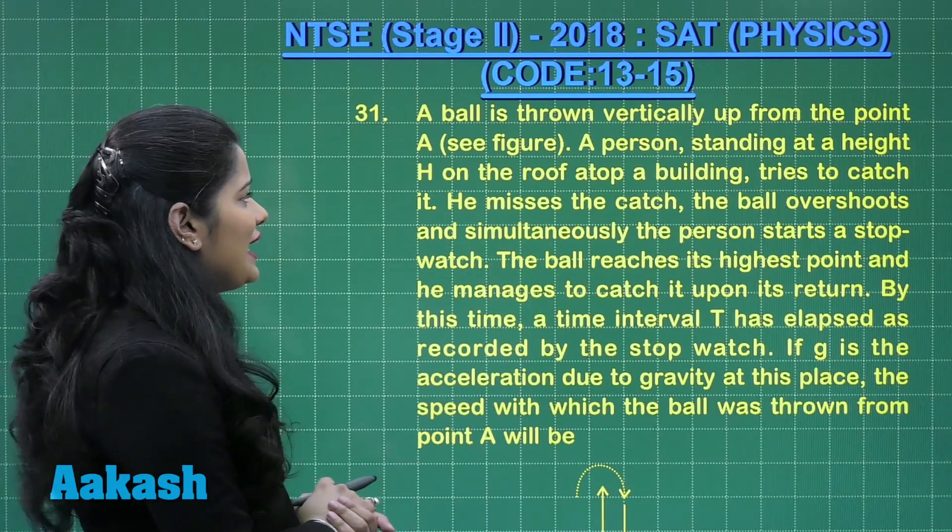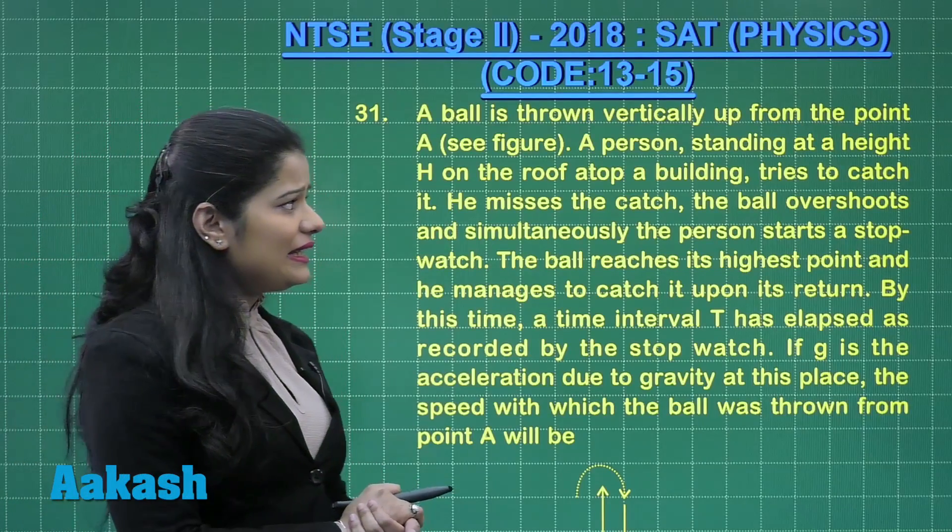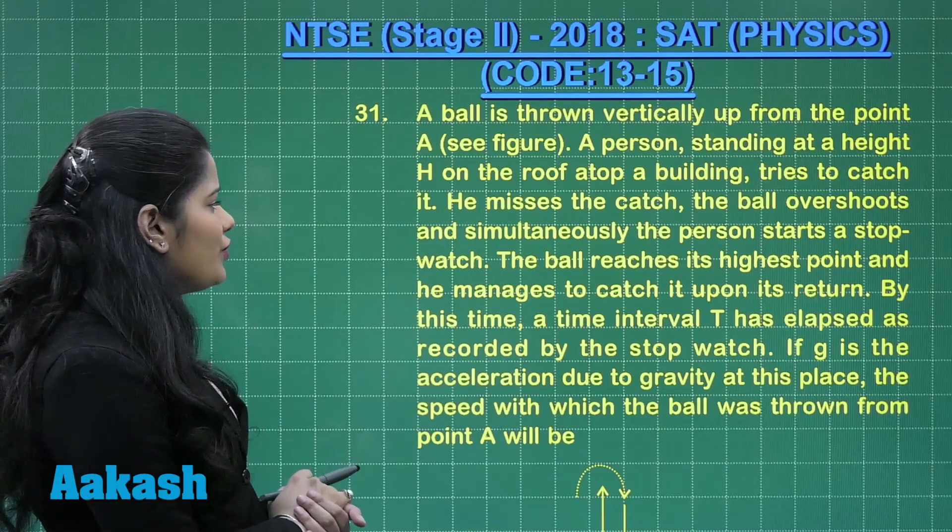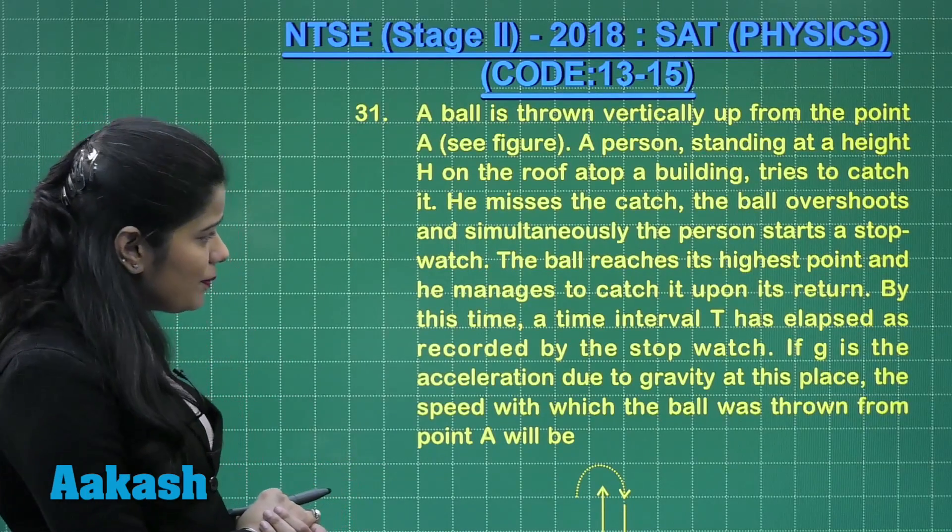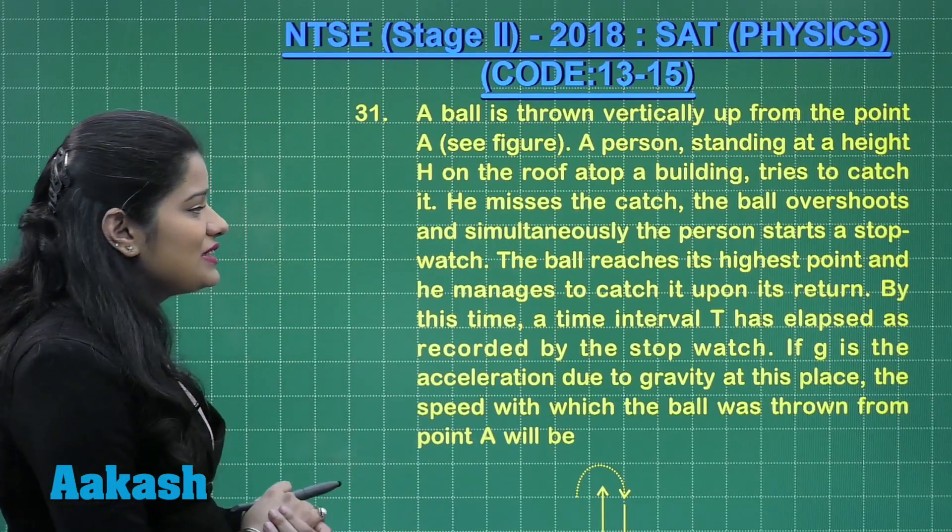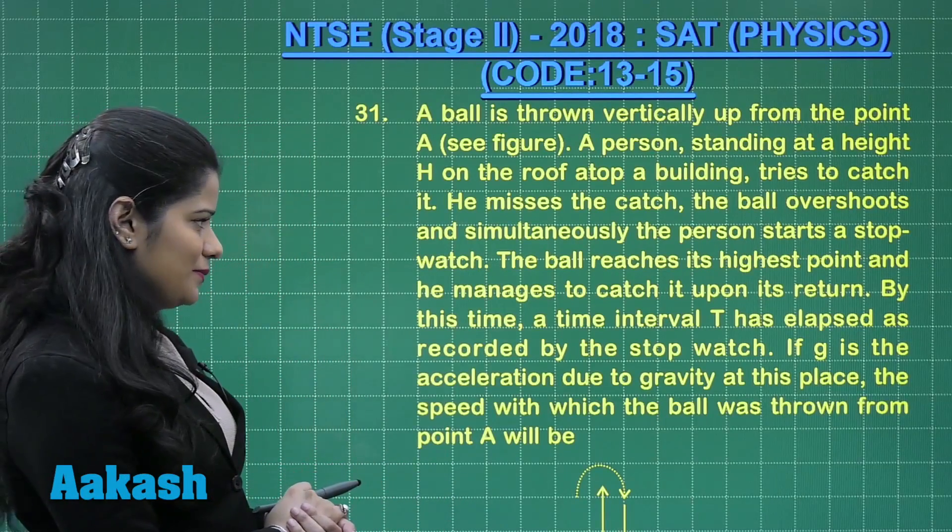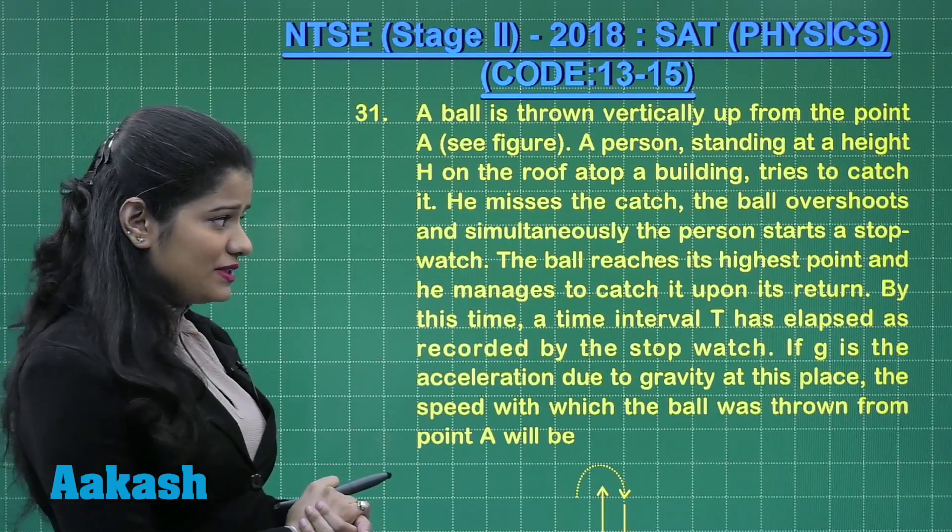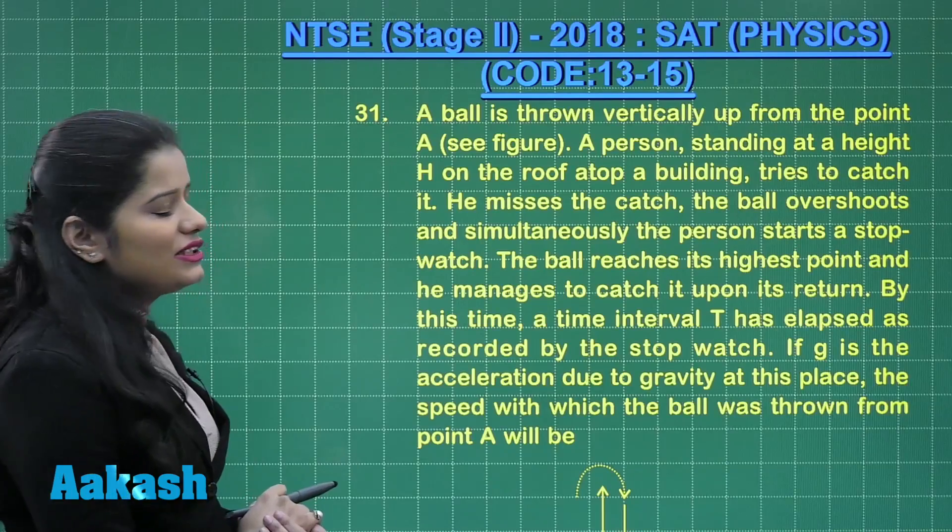A person standing at a height H on the roof atop a building tries to catch it. He misses the catch. The ball overshoots and simultaneously the person starts a stopwatch. The ball reaches its highest point and he manages to catch it upon its return. By this time,